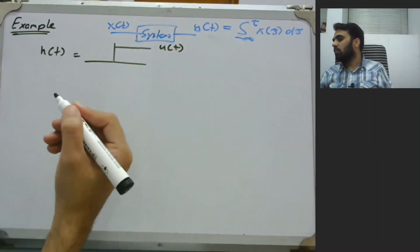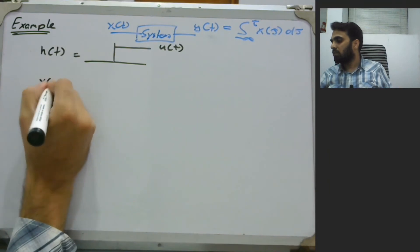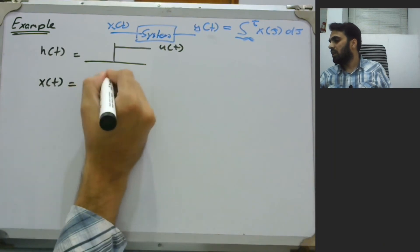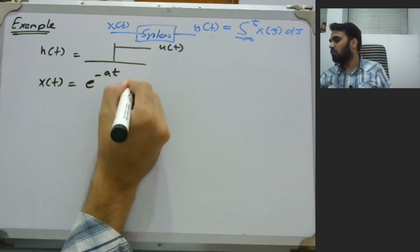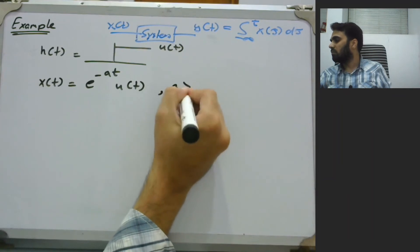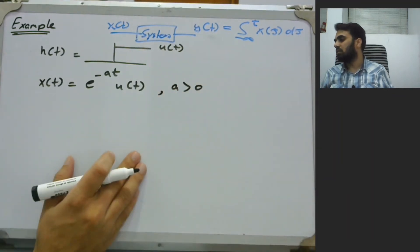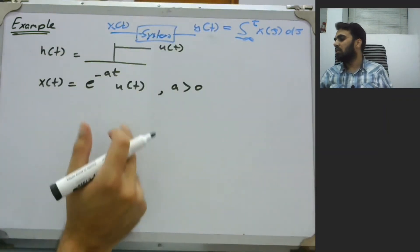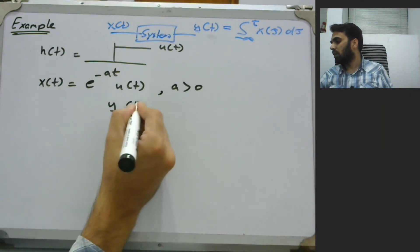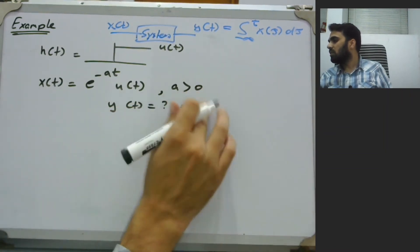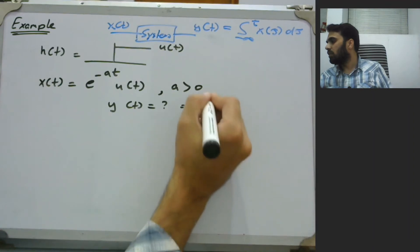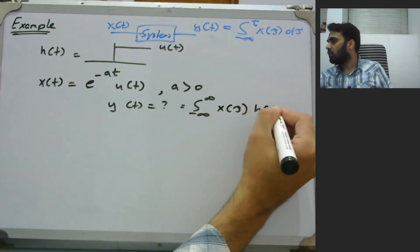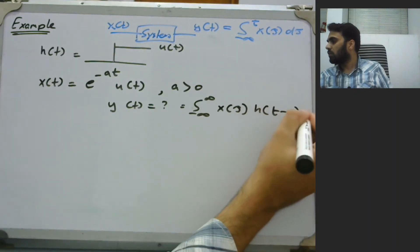Now say we give another input X of T, which is simply e^(-aT) U of T, where to simplify, a is greater than zero. So if we give this X of T as the input, what would be the new output? We need to find Y of T. We can find this by means of the convolution integral: the integral from minus infinity to infinity of X of TAU times H of T minus TAU d TAU.